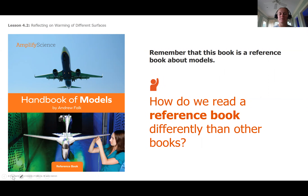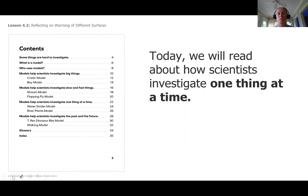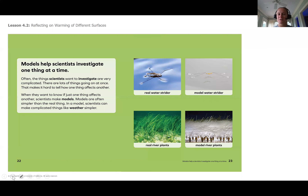On day five, remember that this is a reference book called Handbook of Models. We don't read a reference book like other books - we just read the pages we need. Today we're going to read about how scientists investigate one thing at a time. We go to the table of contents and find the page we want. It says: models help scientists investigate one thing at a time. Often the things scientists want to investigate are very complicated - there are a lot of things going on at once that makes it hard to tell how one thing affects another. When they want to know if just one thing affects another, scientists make models. Models are often simpler than the real things.